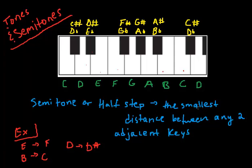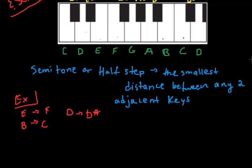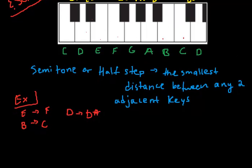Now a whole tone or a whole step would obviously be two semitones or two half steps. So on the keyboard, a whole tone is any two keys with one key in between. So between C and D, that would be a whole tone. You get the point. So why don't I just write that out really quickly.